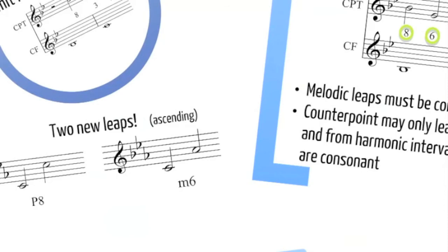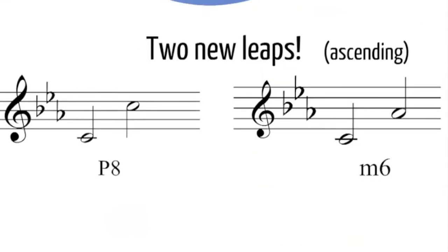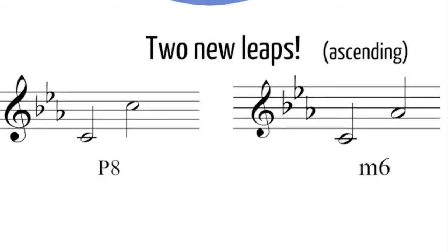And I now have some good news for you, which is that you now have two new leaps which you can use. The first is an octave that can be ascending or descending. And the second is a minor sixth, not a major sixth, but a minor sixth, which must be ascending. So all of the leaps that you could use before plus these two new ones are permissible.